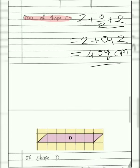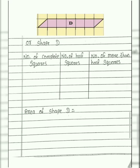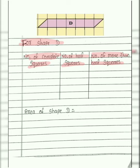We will go for shape D. Pay attention here. We will start with our statement for shape D and draw 3 columns: number of complete squares, number of half squares, number of more than half squares. Now we count complete squares: 1, 2, 3, 4, and 5. There are 5 complete squares. We will write 5.